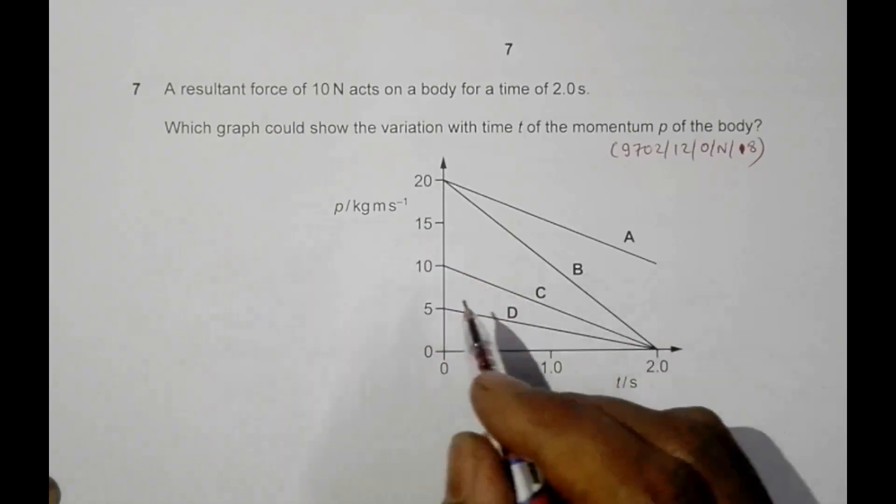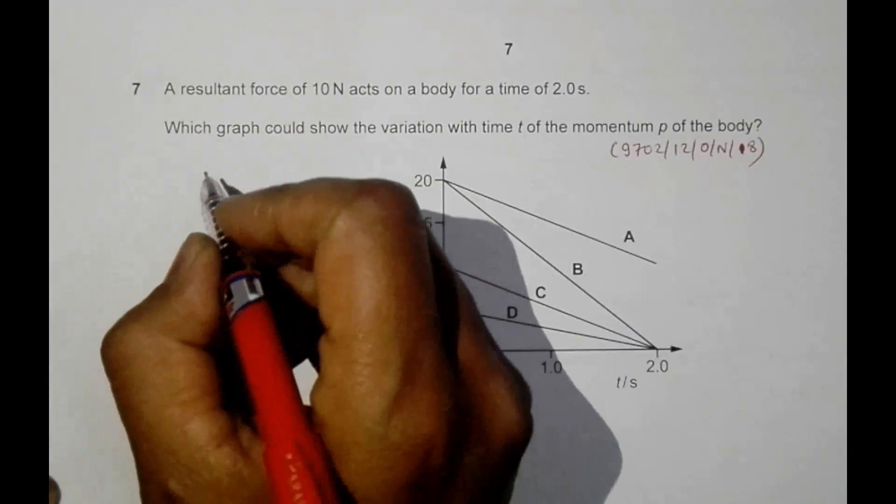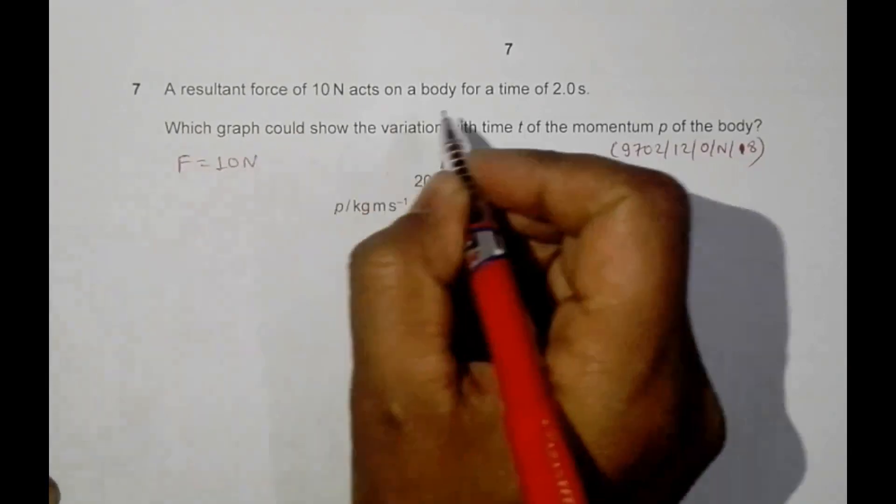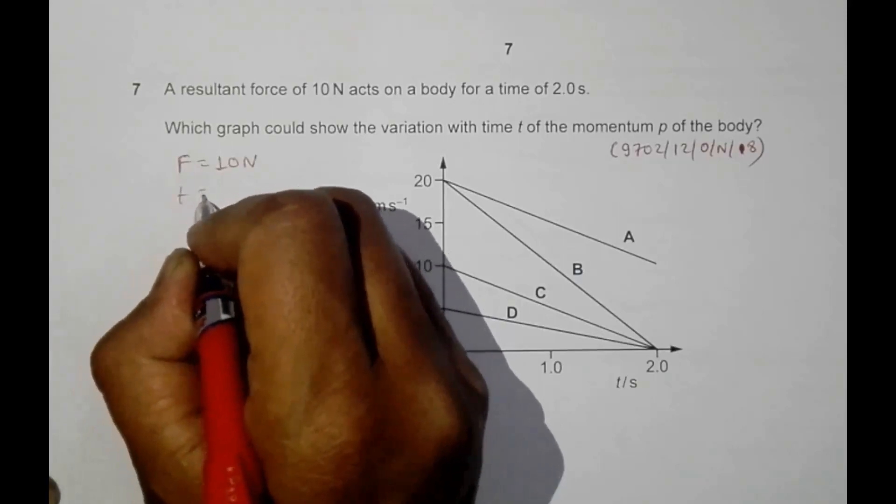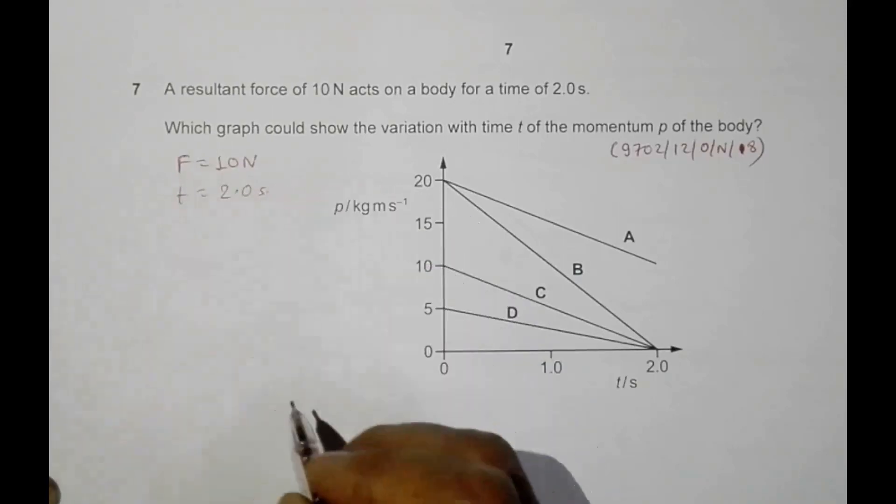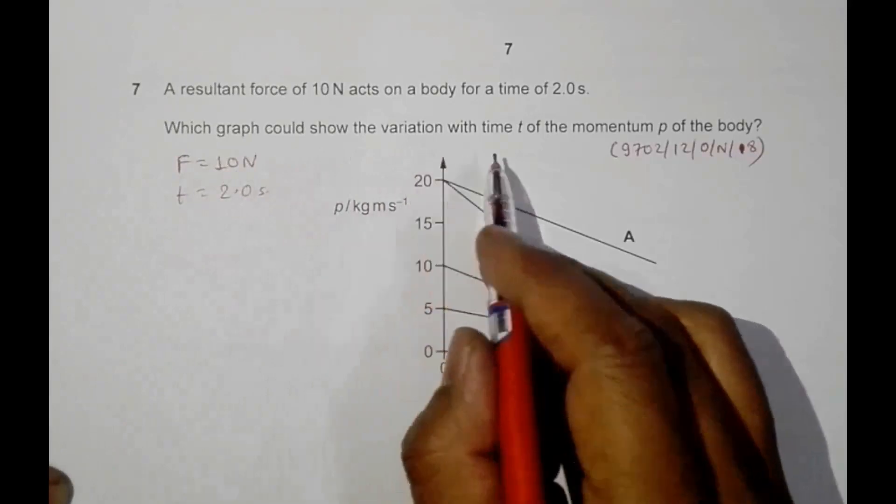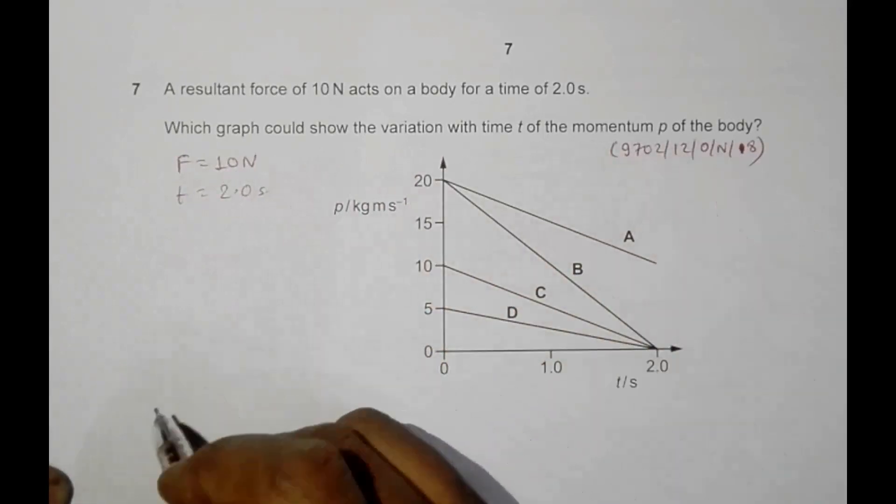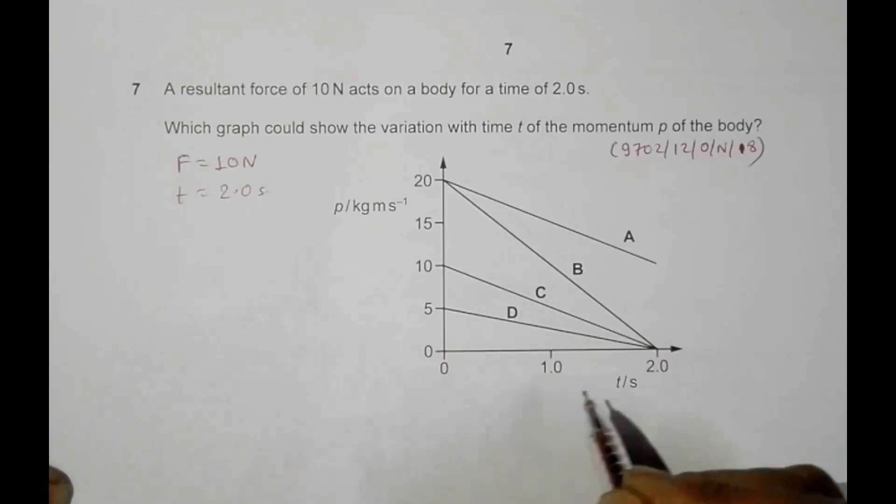It says that a resultant force of 10 Newton acts on a body for a time of 2.0 seconds. So you have to find which graph could show the variation with time t of the momentum p of the body. Since the graph is of momentum and time...